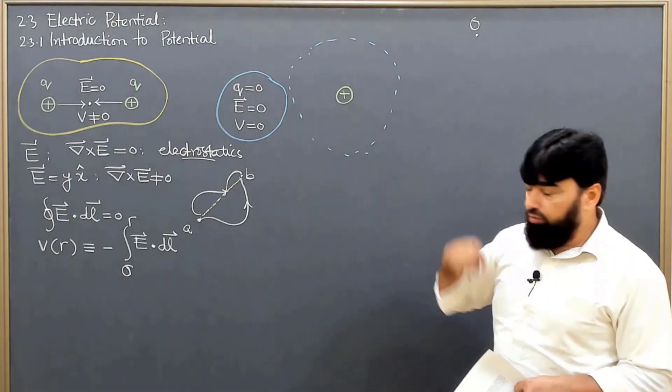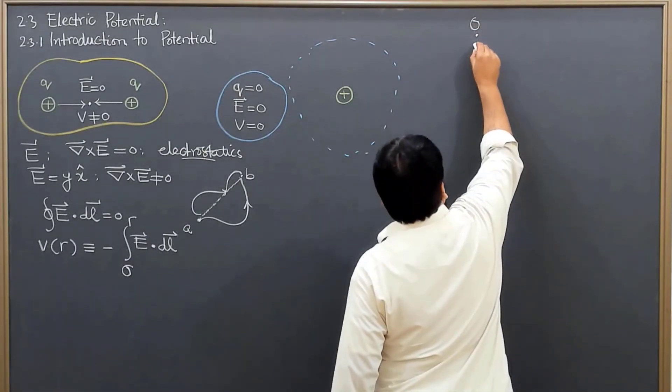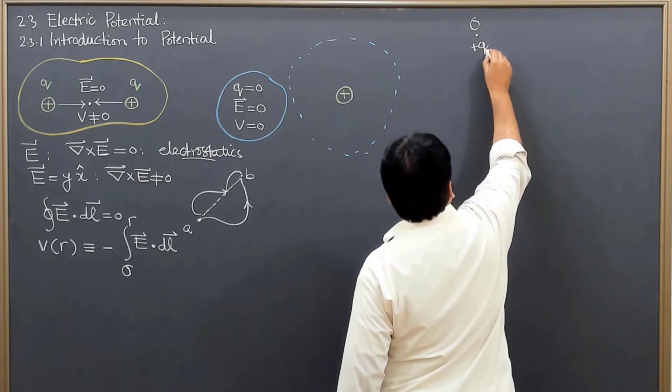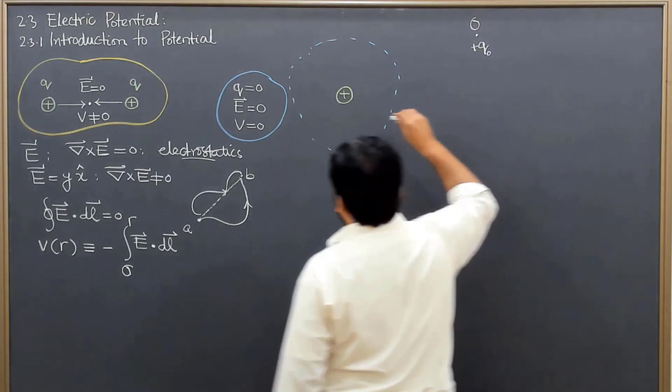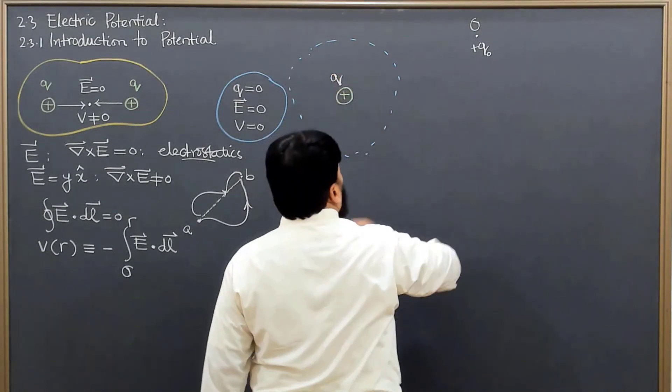So let's say this is point O and I'm moving a test charge plus Q here. I'll call this Q naught, and here I am having a source charge Q.